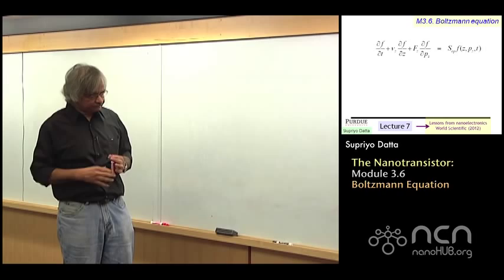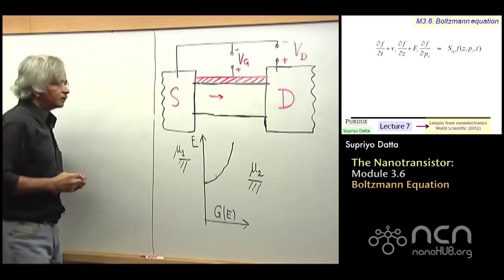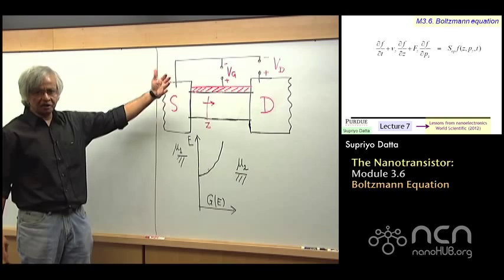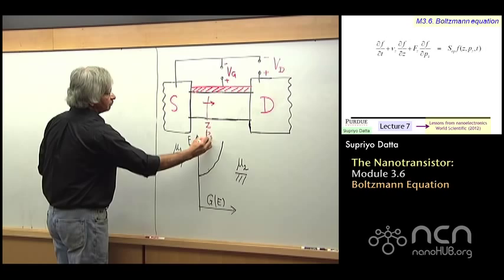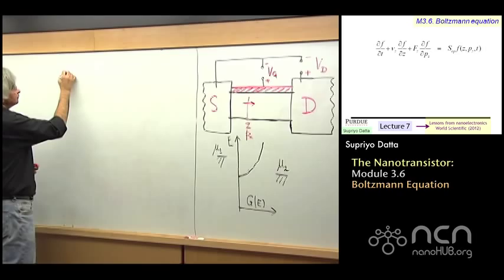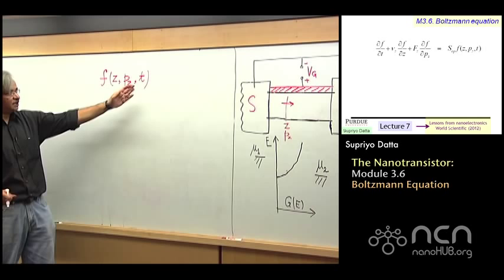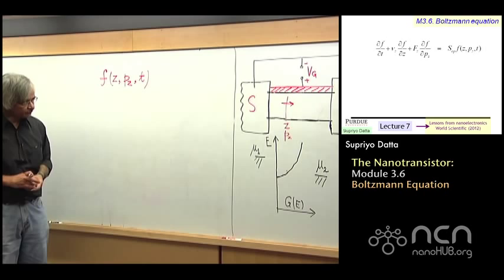Now let me explain this point a little. So if you wanted to describe the electrons inside a device, what you'd have to write down is that at a particular location z, what is the distribution of electrons in terms of their momentums. And for this discussion, let's assume it's just one dimensional. So we are talking about z and the momentum, z component of the momentum.